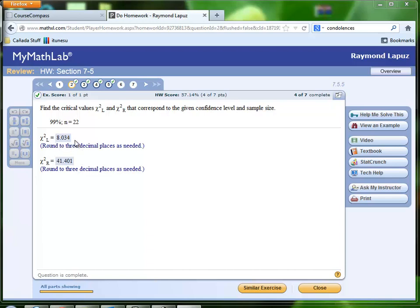Our research on table A4 helped us find chi-square L to be equal to 8.034 and chi-square R to be 41.401.